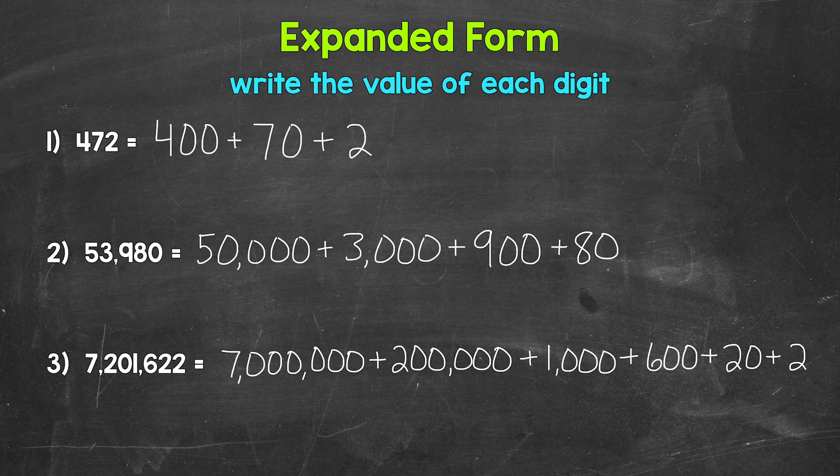For the practice answers: number one should be 50,000 plus 3,000 plus 900 plus 80. And then lastly, for number three, we should have 7,000,000 plus 200,000 plus 1,000 plus 600 plus 20 plus 2.